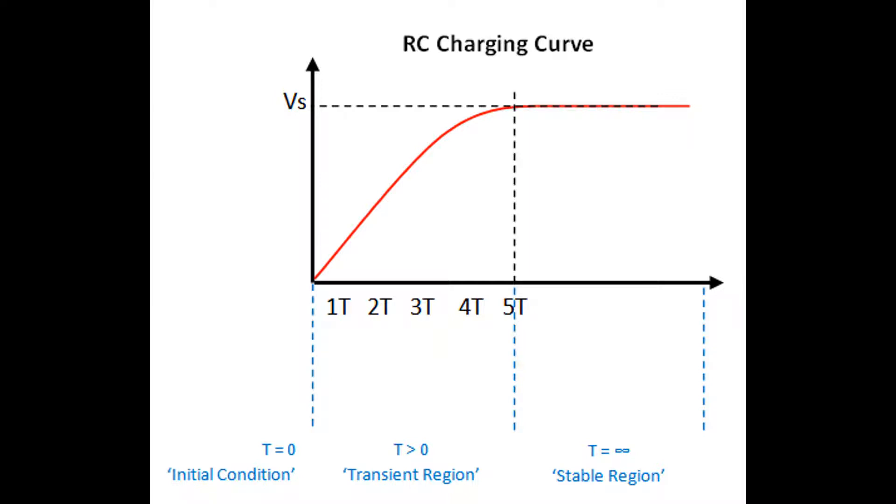The graph areas also tend to have names. So T equals 0 is our initial circuit conditions. In this case we have decided that the capacitor is discharged. T bigger than 0 is referred to as the transient region. And then T equals infinity is referred to as the stable region.